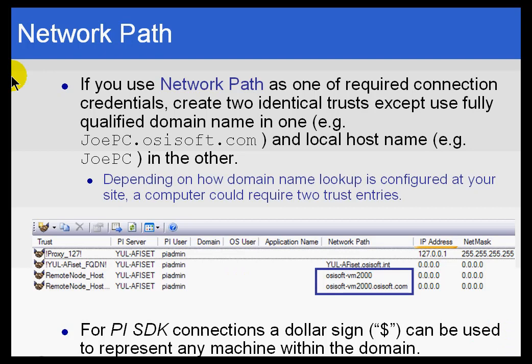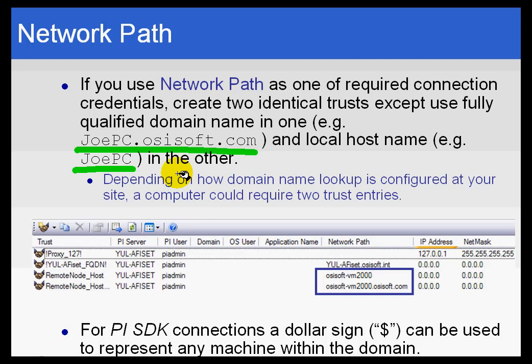If one of the connection criteria in your trust is going to be the network path, then it's really a good idea to set up two trusts: one that makes reference to the network path by its fully qualified domain name, and the other that makes reference to it by its local name. That's because depending on how your domain name lookup is handled, a computer may return one or the other when looking for the name of that computer.